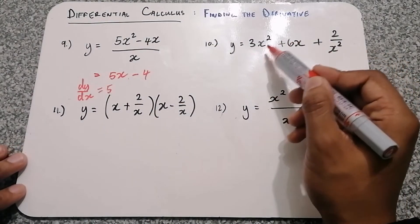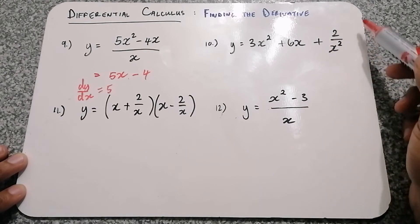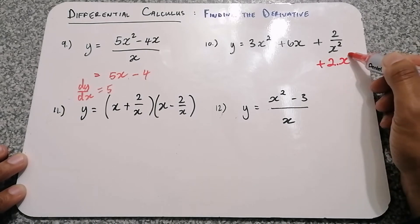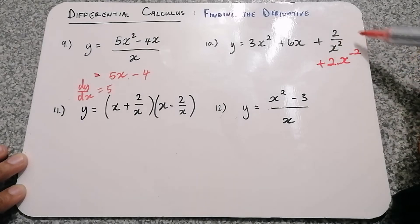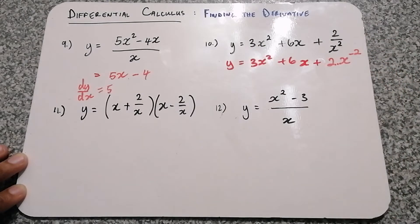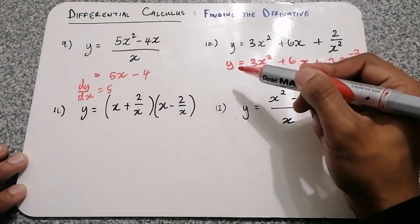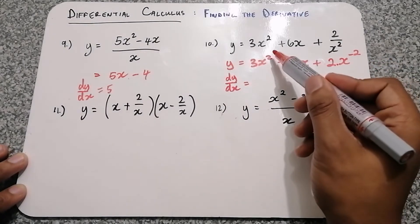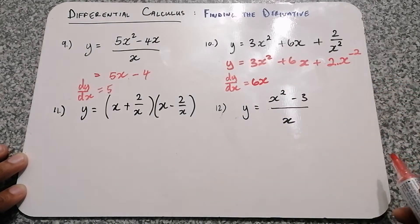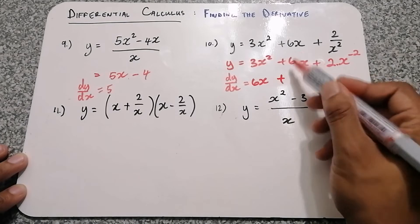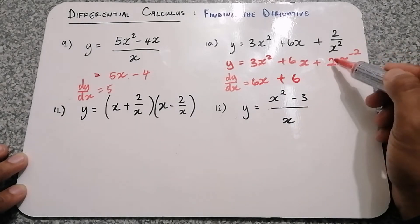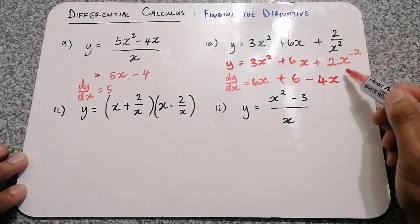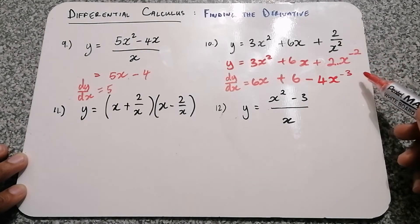For question 10, we have 3x squared plus 6x plus 2 over x squared. Let's first prepare this by writing the last term as 2 times x to the power of negative 2, bringing the x squared to the top so the exponent becomes negative. Nothing else changes — we write it down the same. Then we take the derivative. 2 times 3 is 6, and then we decrease the exponent by 1, giving 6x. Then we multiply the negative 2 by the positive 2, giving negative 4, and deducting 1 from negative 2 gives an exponent of negative 3.